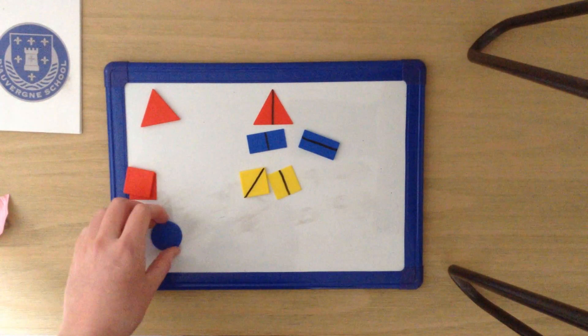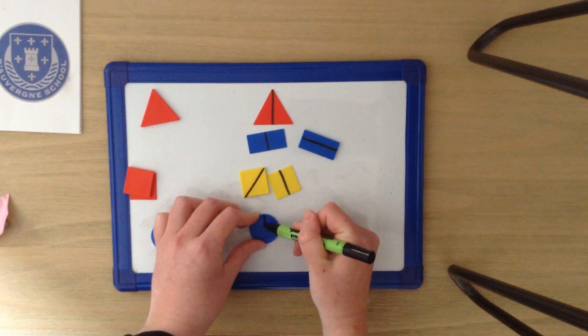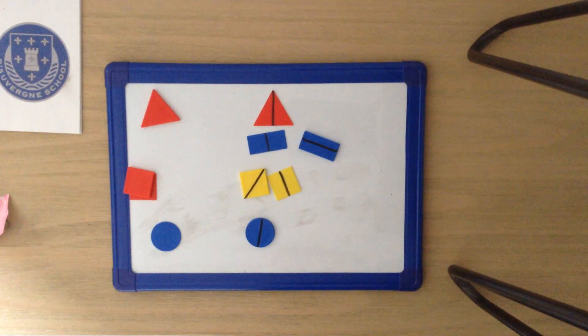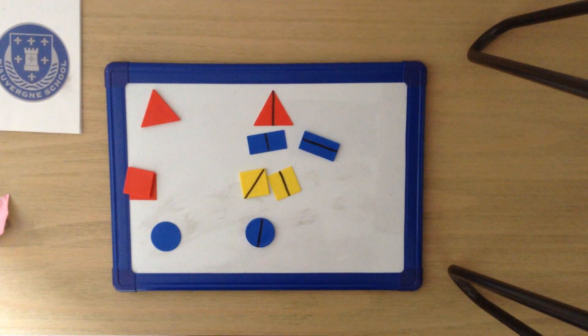And we have our circle, where the line of symmetry is down there as well. I wonder if you could find any more lines of symmetry in these shapes.